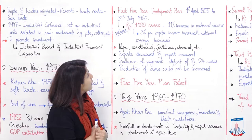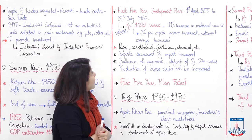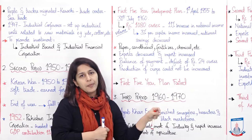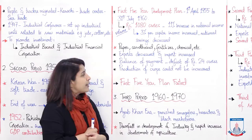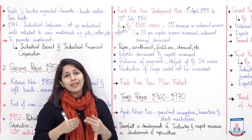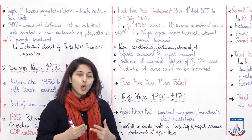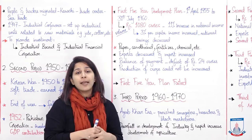Is plan mein kuch cheezein achieve hui, kuch nahi. Jo achieve hui wo yeh thin ki there was 11 percent increase in national income — jahan agriculture produce barh rahi thi, wahan industries jo set up hui thi wo bhi continue kar rahi thi. Three percent per capita income increase. National savings decreased — yeh negative impact tha. Paper, cardboard, fertilizer, chemical — yeh wo industries thin jinko set up kiya gaya. But exports decreased and imports increased — jab industrial setup ho raha tha to import karke hi cheezein set up ki ja rahi thin.